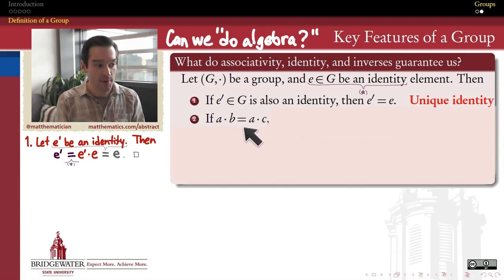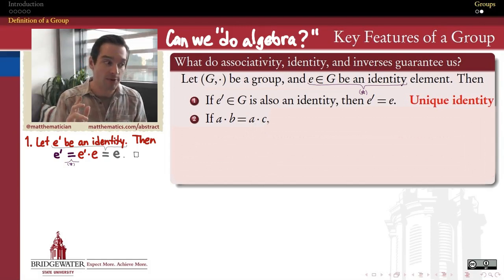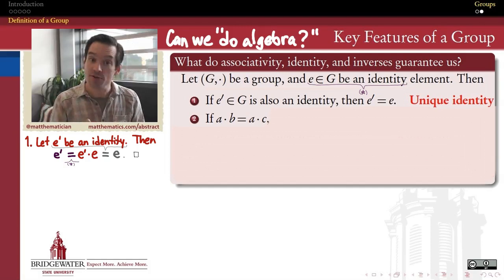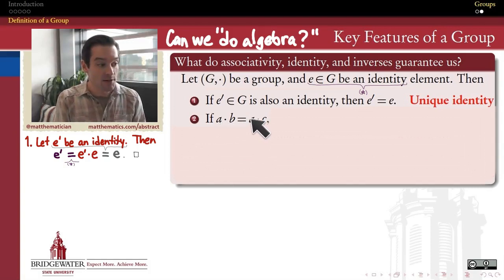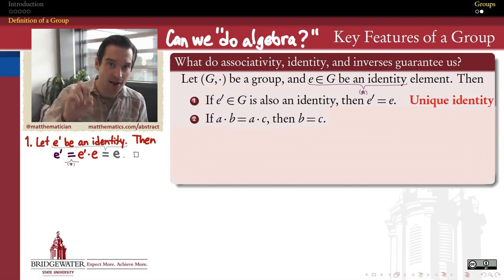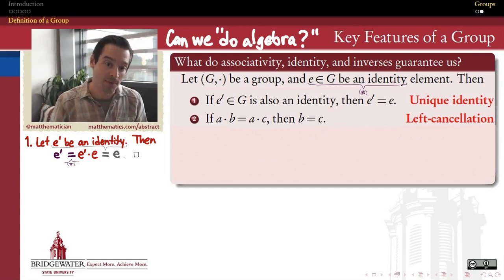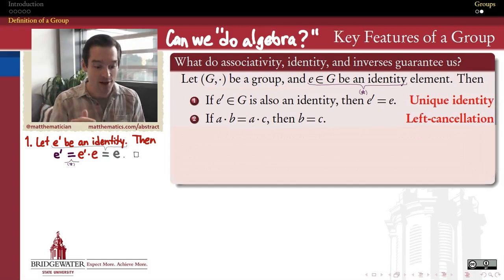Here's an equation: A times B equals A times C, where A, B, and C are elements of the group, and by 'times' I really mean the operation which defines this group. Can I simplify this equation by operating on both sides? Can I conclude that if AB equals AC, then B must equal C, just by canceling the A's? We call this left cancellation — canceling a common factor of A on the left side of both expressions. This is true inside of our group structure.